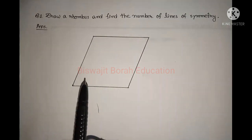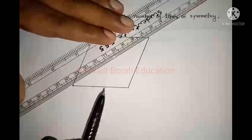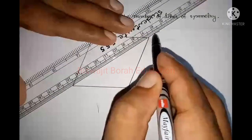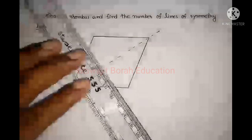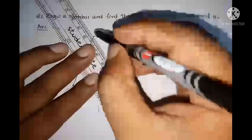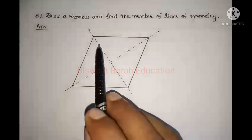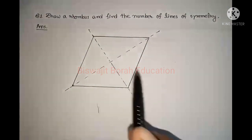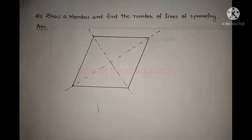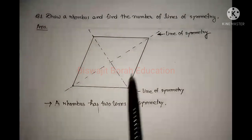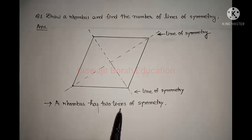This is a rhombus. If we draw a line like this, then this line divides the rhombus into two equal halves. And if we draw a line from here, this line also divides the rhombus into two equal halves. So these two lines are the lines of symmetry of this rhombus. A rhombus has two lines of symmetry.